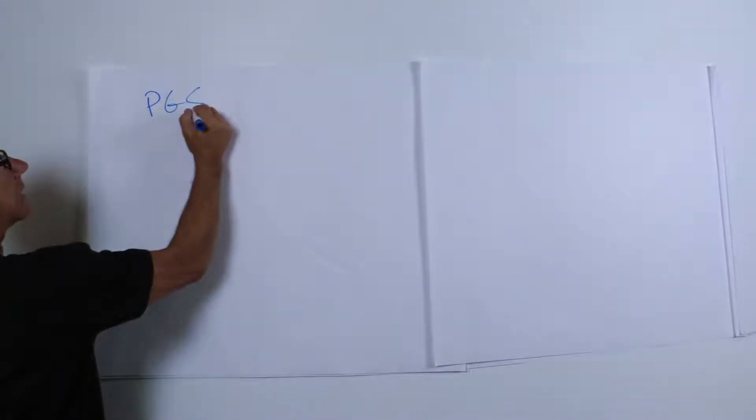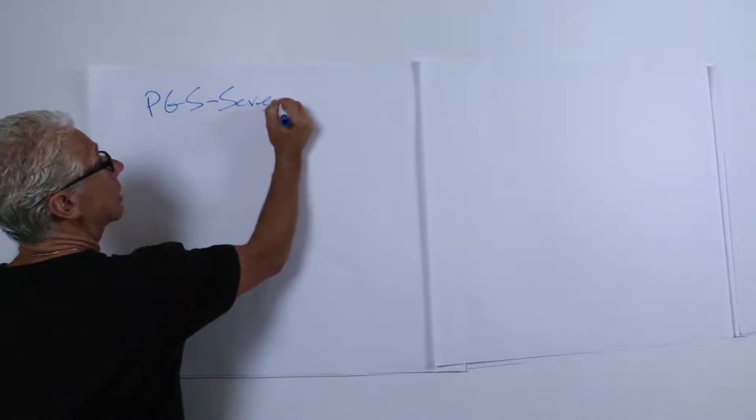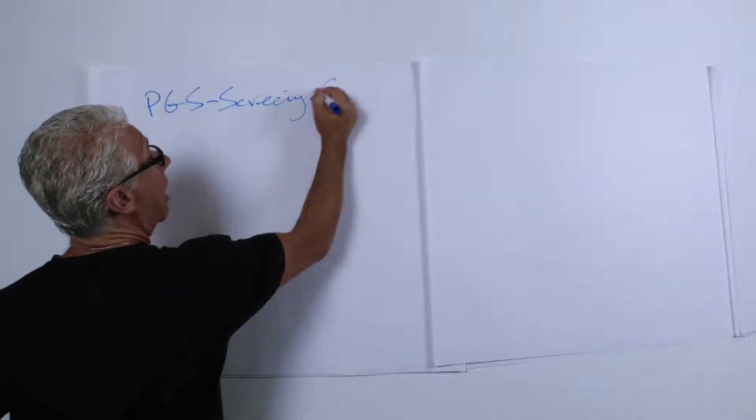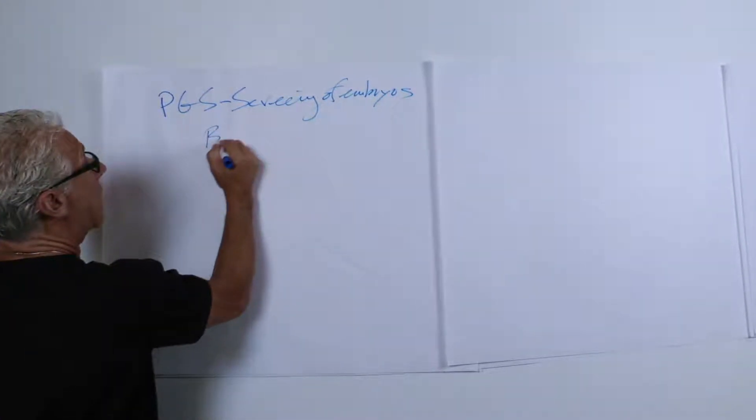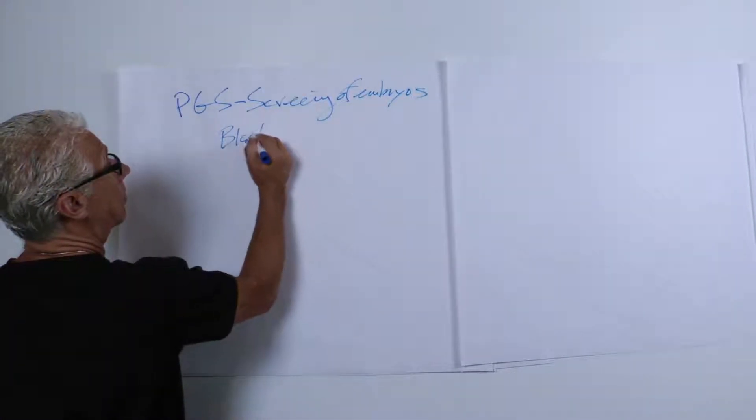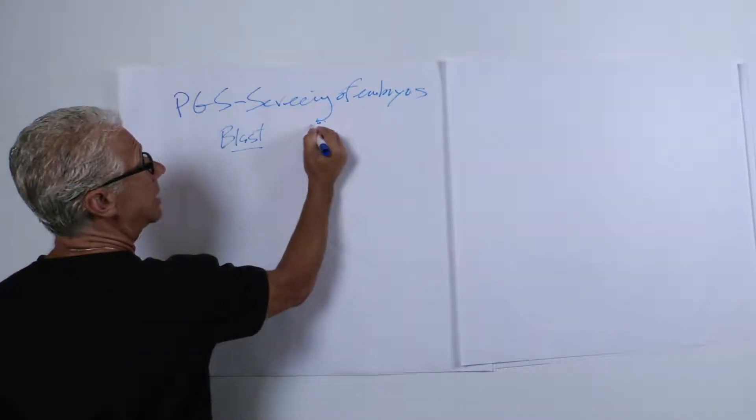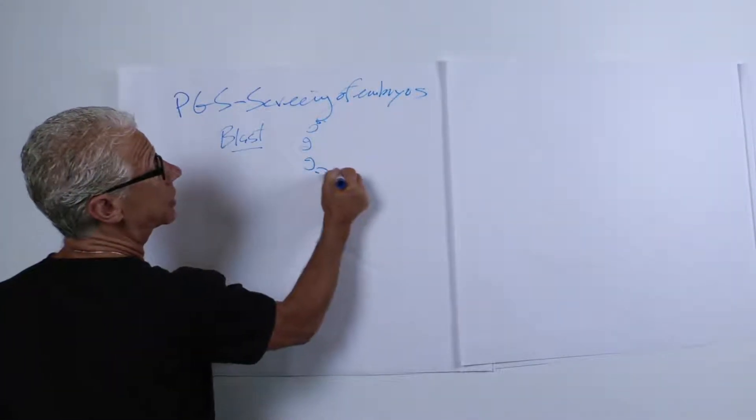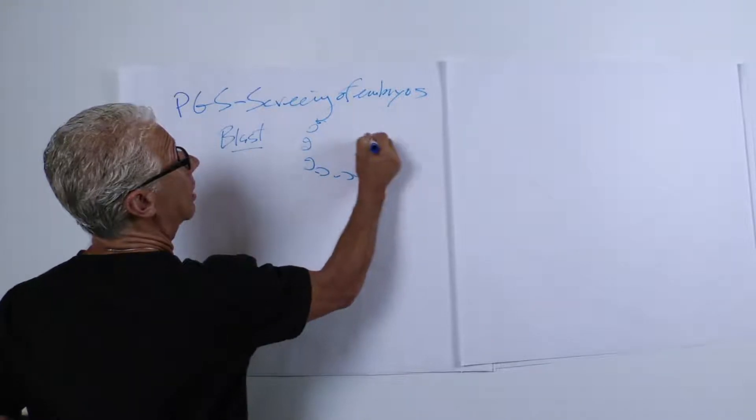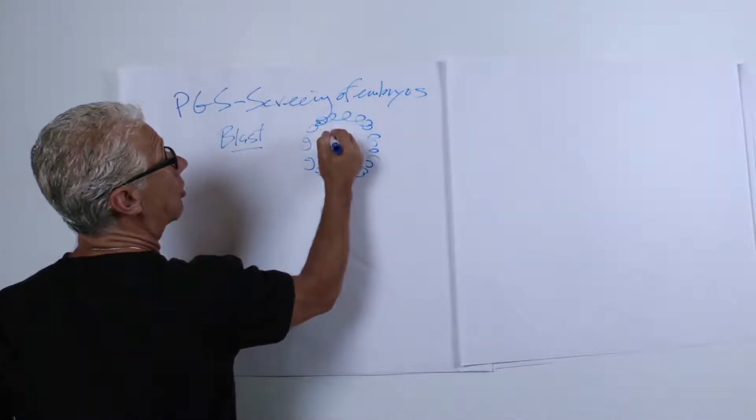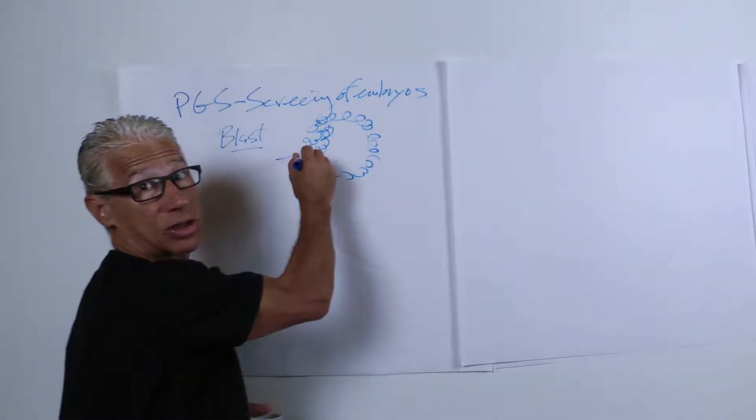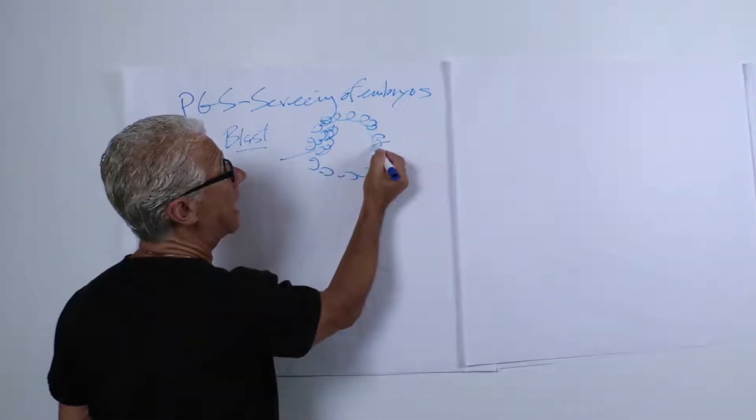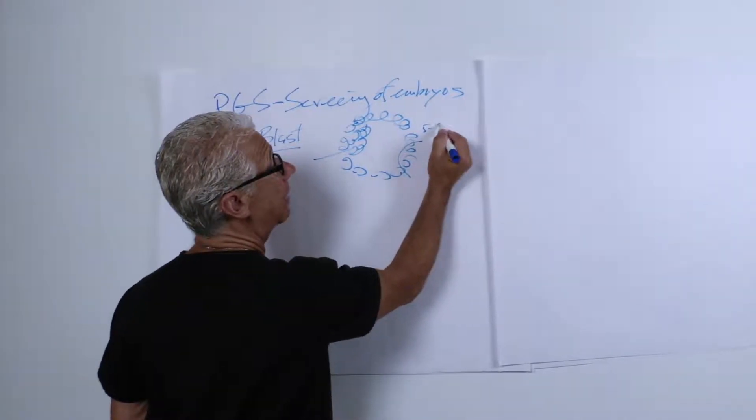So PGS is screening of embryos, and this requires a blastocyst embryo where we take a day five, six, or seven embryo. This is the outer layer, the trophectoderm, and this is the actual fetal area.